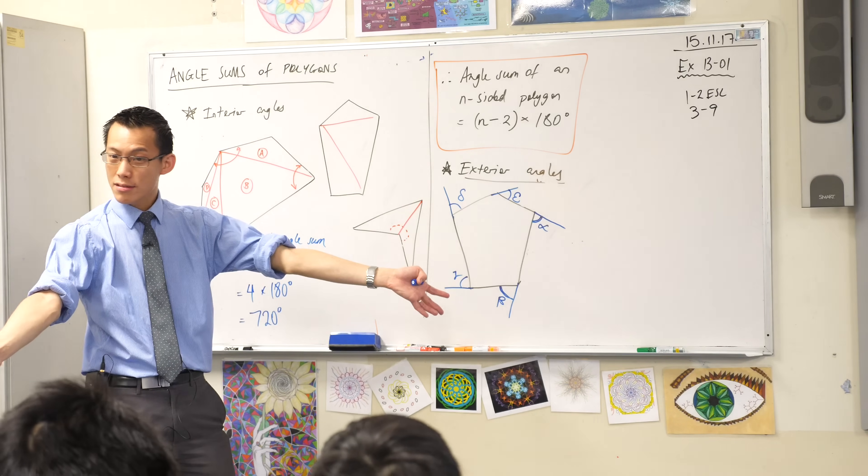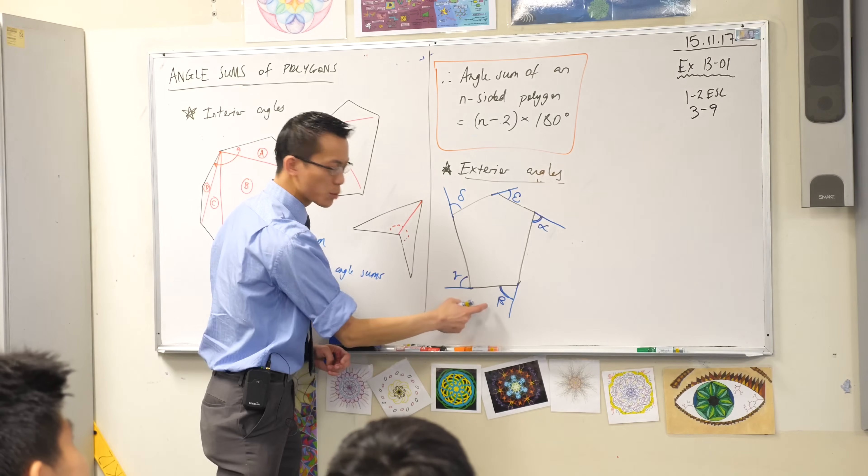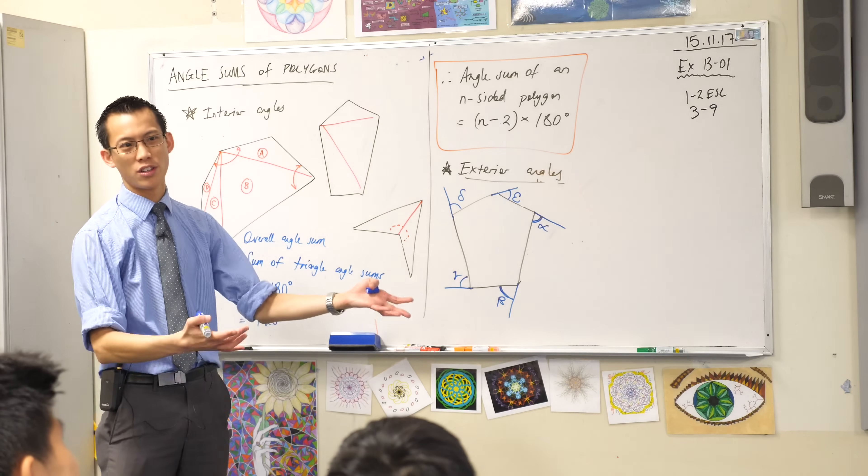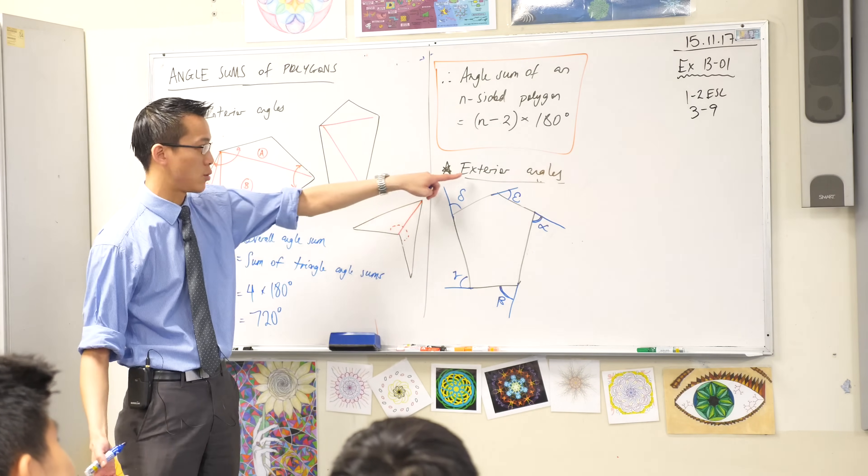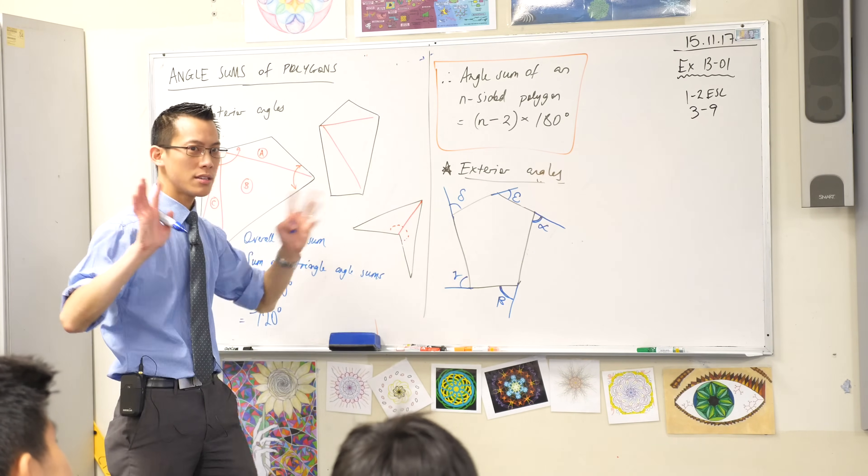So there's five sides. There's five angles, but they're not inside the polygon. They're outside, which is why they're exterior angles. And here's the weird thing.